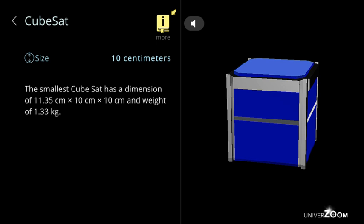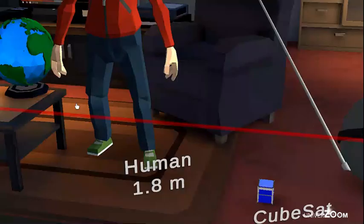CubeSat, size: 10 centimeters. The smallest CubeSat has a dimension of 11.35 centimeters by 10 centimeters by 10 centimeters and a weight of 1.33 kilograms.